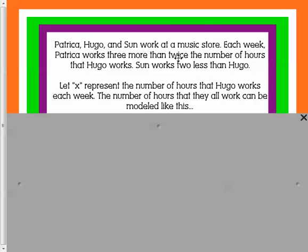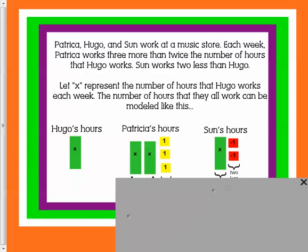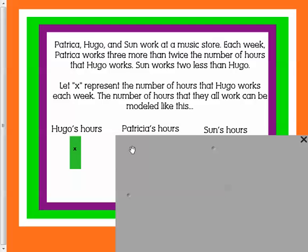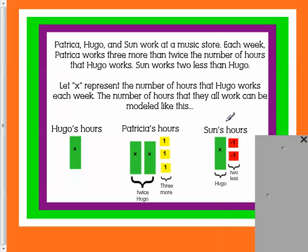Okay, that seems overwhelming, but we're going to break it apart. We're going to let x represent the number of hours that Hugo works each week. And the number of hours that they all work can be modeled like this. So Hugo's hours are x. Patricia's hours are twice Hugo's and then 3 more. Son's hours are Hugo's hours but 2 less.